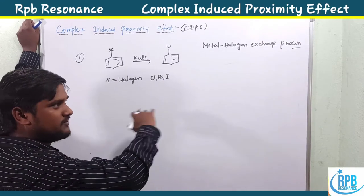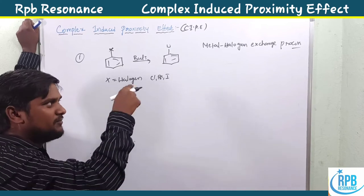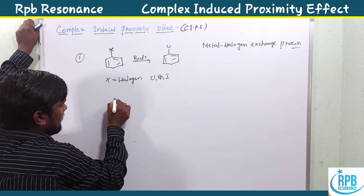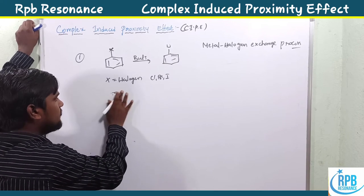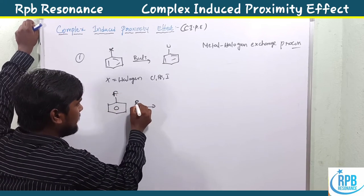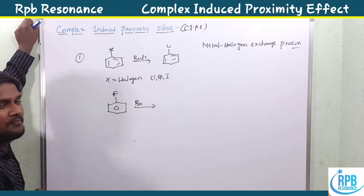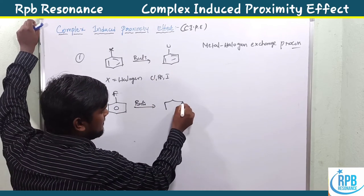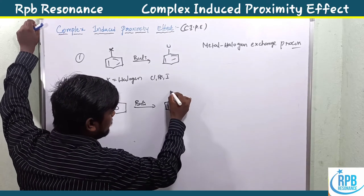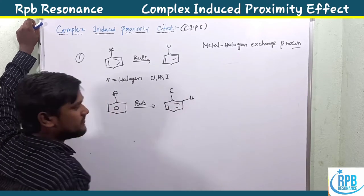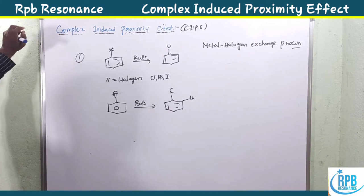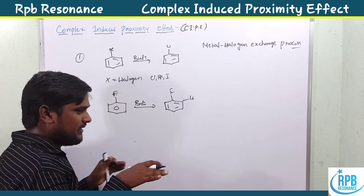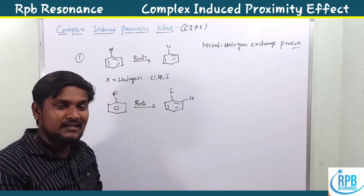After the completion of CIPE, I'll explain the metal-halogen exchange process. If X is equal to fluorine, fluorine cannot affect the metal-hydrogen exchange directly — it instead affects ortho-metalation and gives ortho-metalation. This is the first exception.